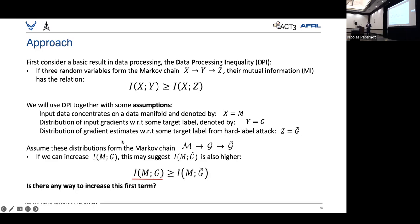Now, we'll assume that these three variables form the Markov chain, which is a big assumption, which I'll cover later. But we posit that if we can increase the mutual information between M and G, the manifold and the true gradients, this could act as an upper bound on the mutual information between manifold and gradient estimates G tilde.